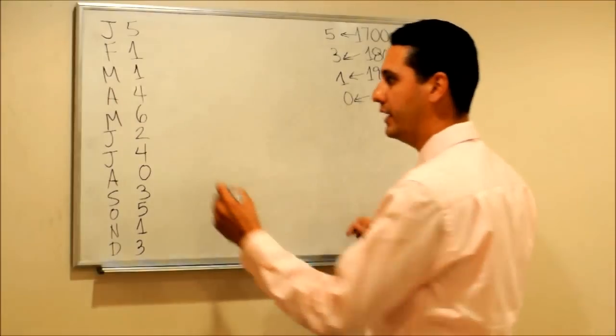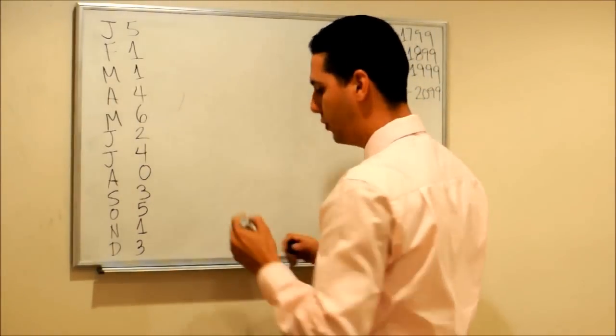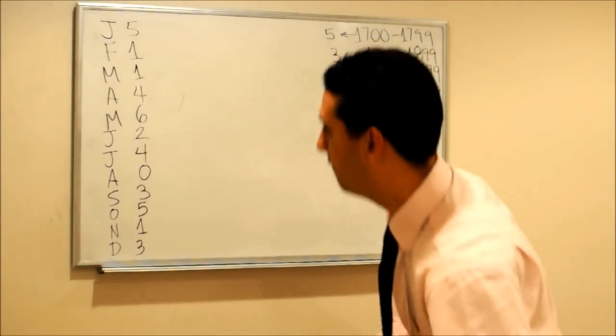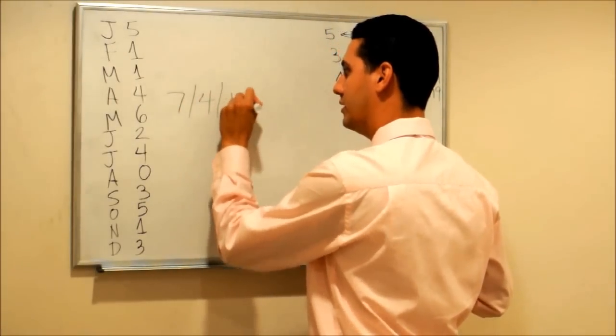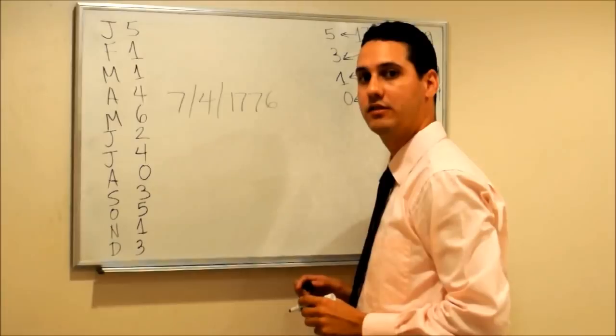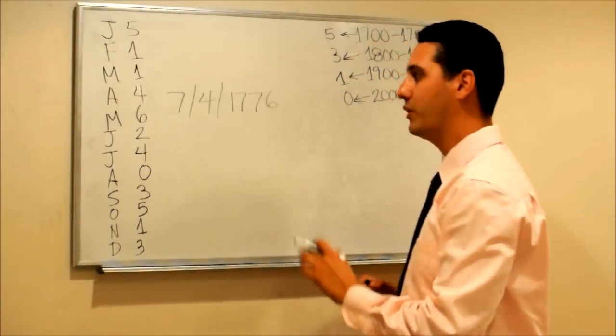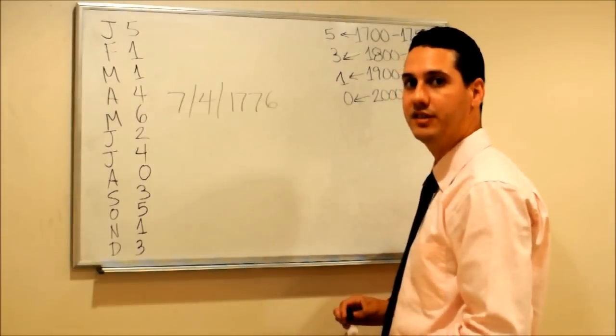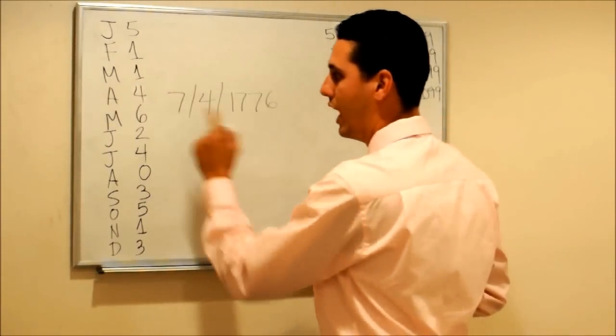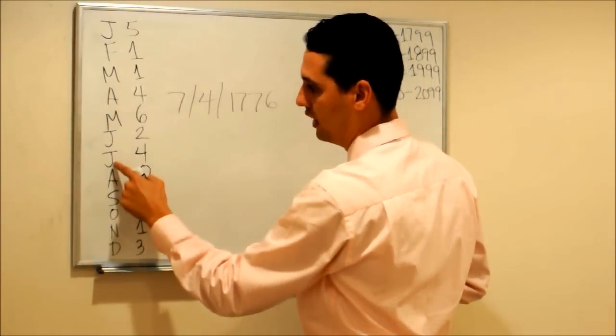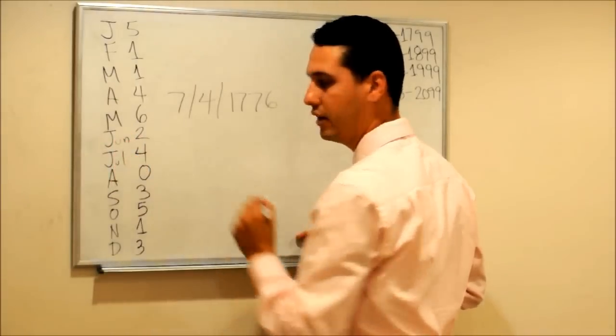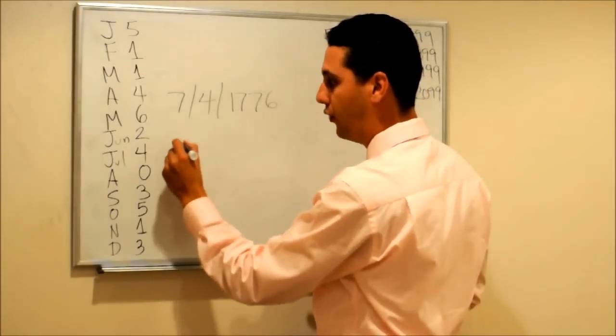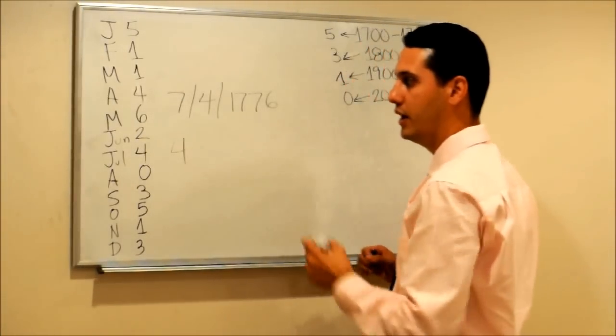For example, let's pick an important date: July 4th, 1776. We want to find the day of the week of this date. July is right here. The number for July is 4, so we need to put the 4. The day is also 4.